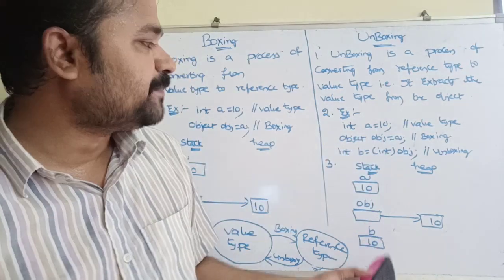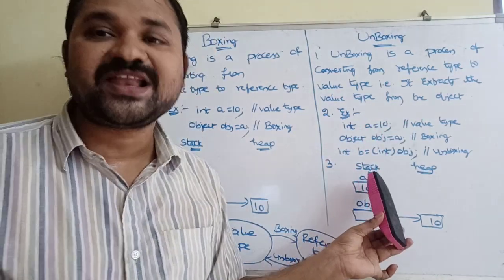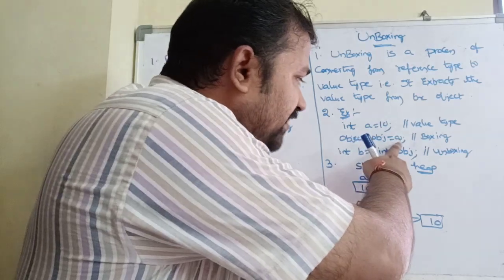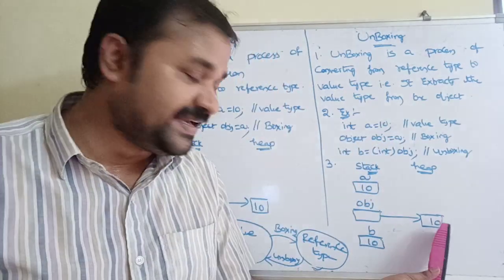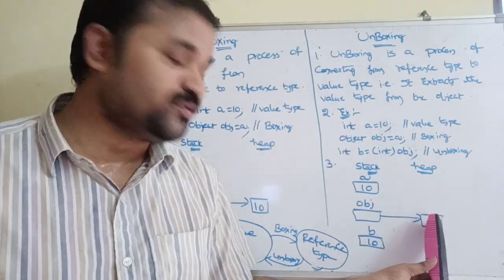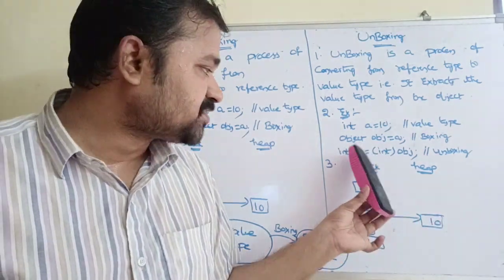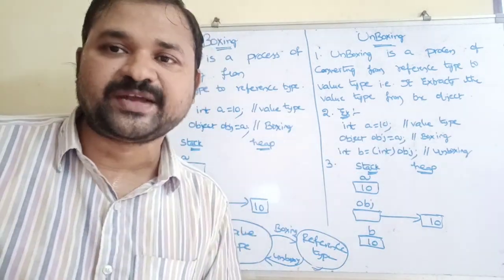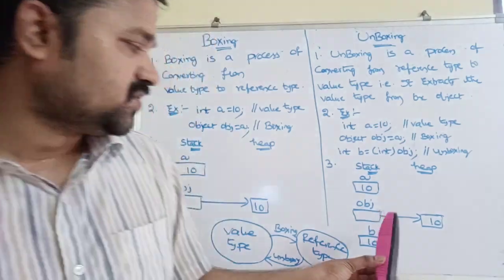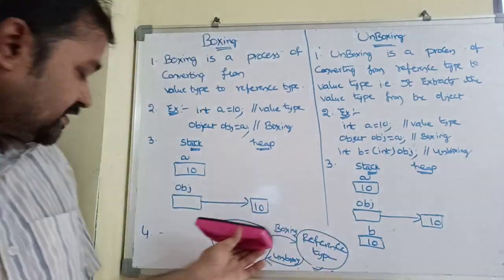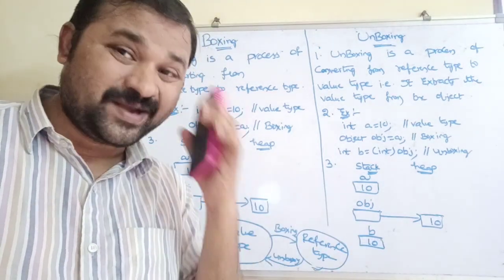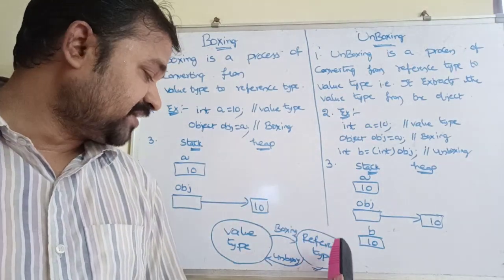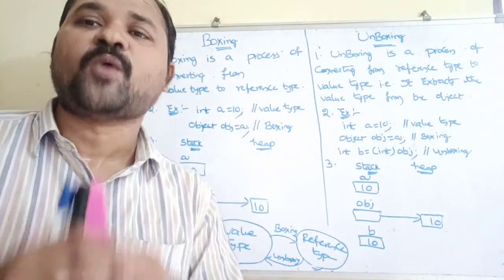In the diagram: a contains 10 as a value type. object ob = a converts value type to reference type, so 10 is now in heap memory and ob points to it. Then b = (int)ob converts the reference type back to value type, storing 10 in the stack. Boxing means converting from value type to reference type; unboxing means converting from reference type to value type.